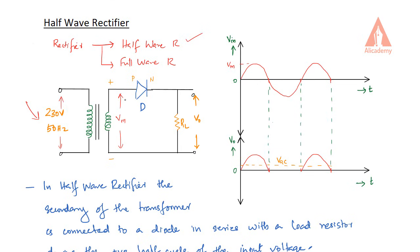When the diode is forward biased it conducts, acting like a short circuit. So the voltage is available across the load resistor RL. The output voltage is equal to Vm — this is a pulsating DC. The voltage varies from 0 to Vm, where Vm is the maximum voltage. So across the load resistor RL, we get output voltage equal to Vm during the positive half cycle.